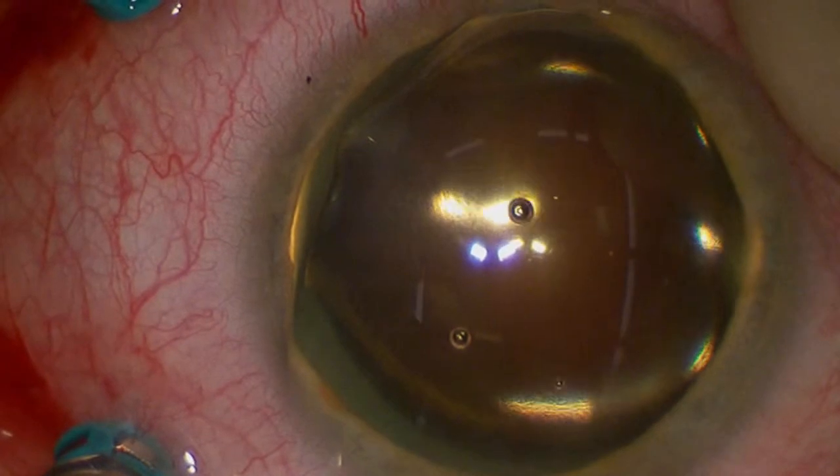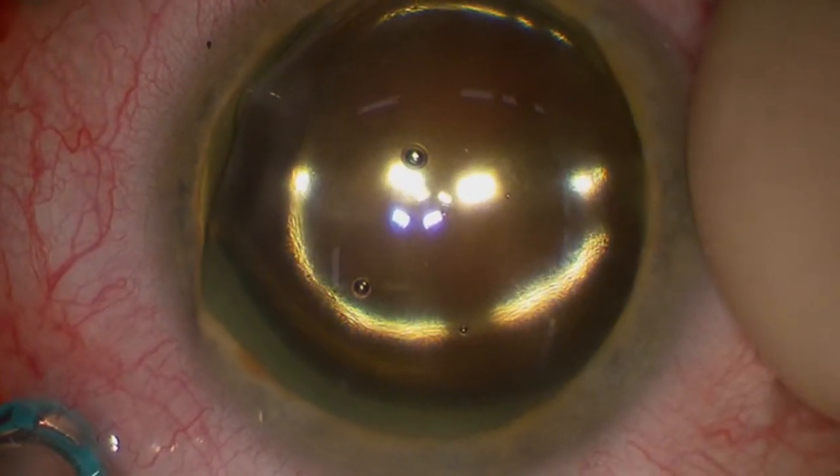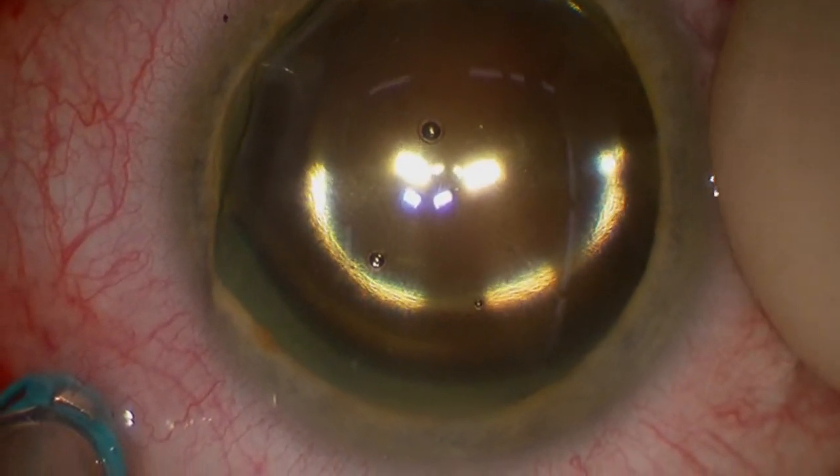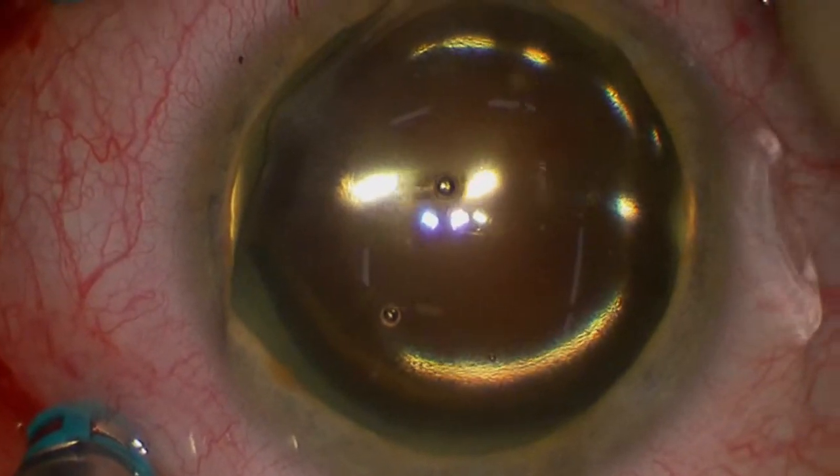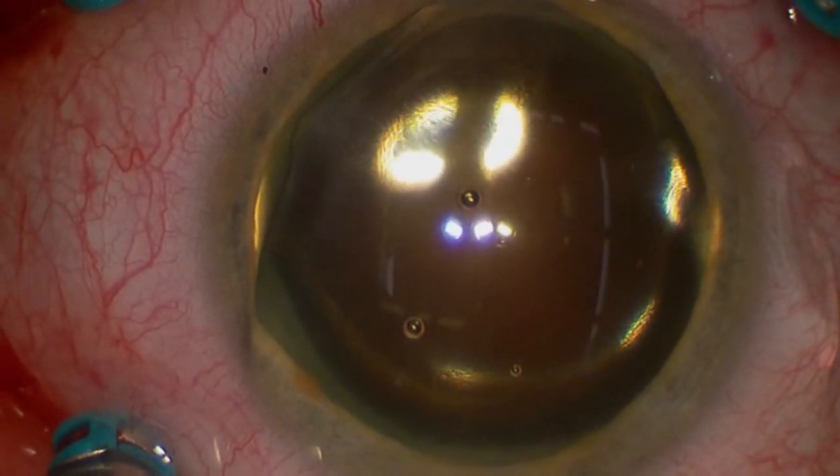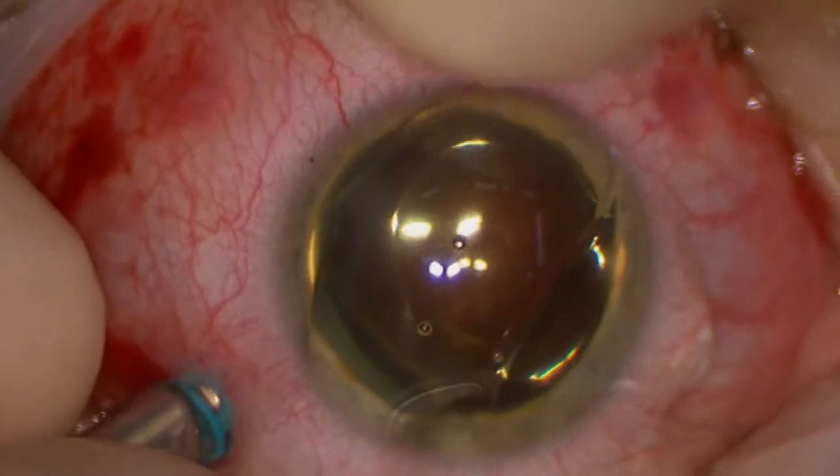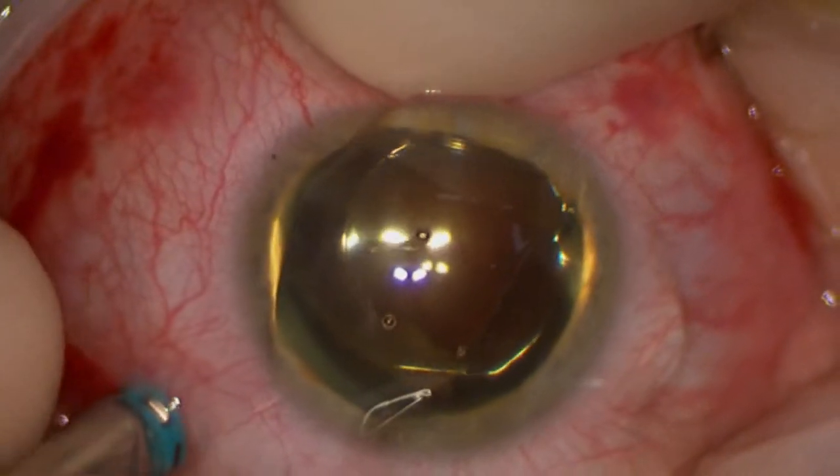Now here we're exchanging the air in the eye for a gas bubble. In this case, we'll use a gas called SF6 that stays in the eye about two weeks, and this keeps the retina dry and in position until such time as it can heal in place.